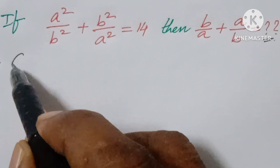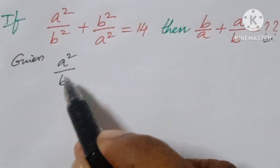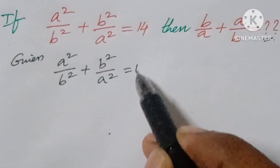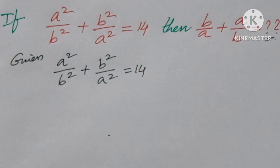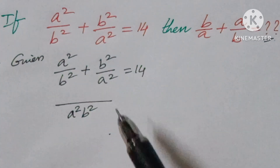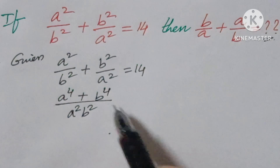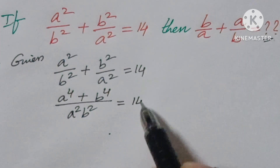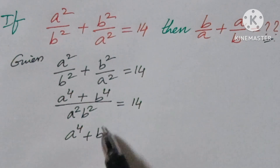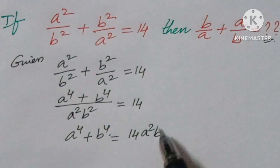So first of all, we are given a² over b² plus b² over a² is equal to 14. Now if you take the LCM — with denominator a²b² — you will get a⁴ plus b⁴ over a²b² is equal to 14, which gives a⁴ plus b⁴ equals 14a²b².